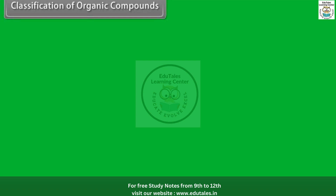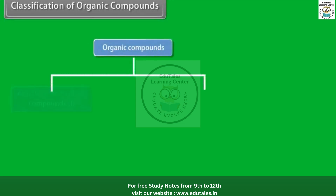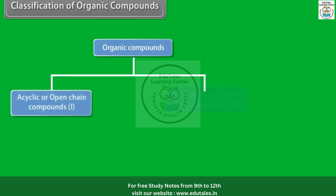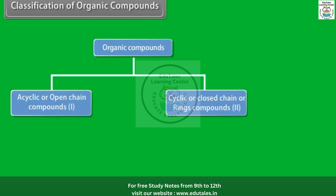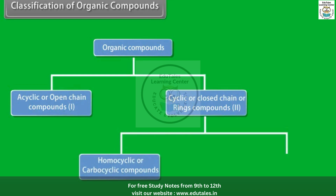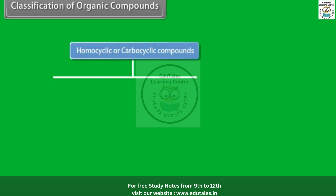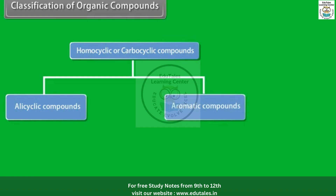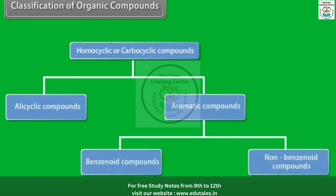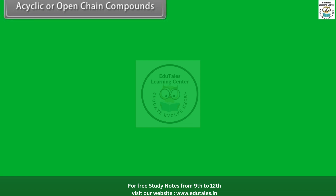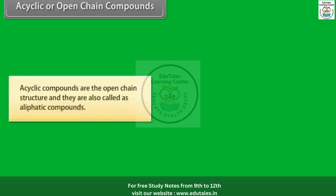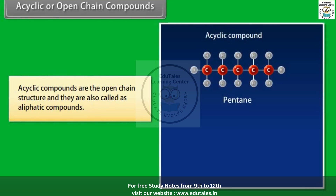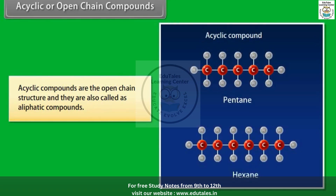Classification of organic compounds: Organic compounds can be grouped into acyclic or open-chain compounds, and cyclic or closed-chain or ring compounds. Cyclic compounds can be further divided into homocyclic or carbocyclic compounds, and heterocyclic compounds. Homocyclic can be further divided into alicyclic and aromatic compounds. Acyclic compounds are the open-chain structures and are also called aliphatic compounds.